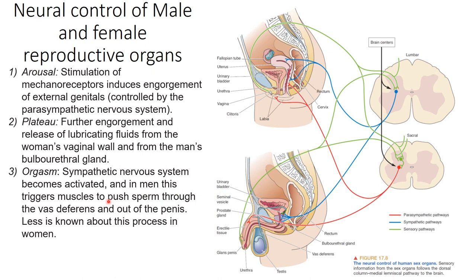The third stage is orgasm — so arousal, plateau, then orgasm. Orgasm involves activation of the sympathetic nervous system, the fight-or-flight response. In men, this triggers muscles deep inside the body to push sperm through the vas deferens and out the penis — that's ejaculation. That's the sympathetic nervous system doing this, activating a series of muscles along the pathway pushing sperm out.